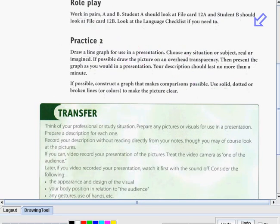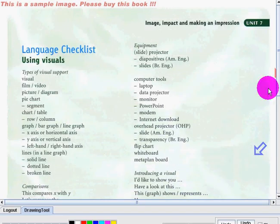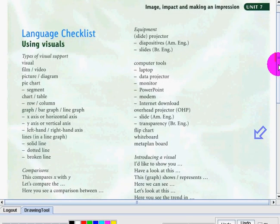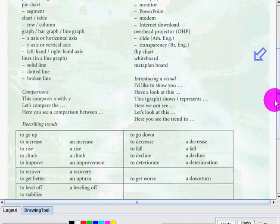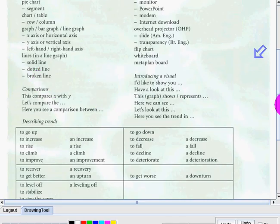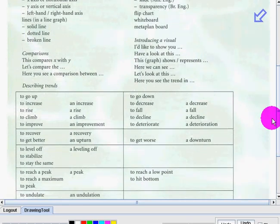Since we're done with those activities, let's have the language checklist using visuals. In this unit, Unit 7, we discussed about the types of visual support, like we have the film, video, the picture, the diagram, the pie chart and all. The comparisons. Describing trends.